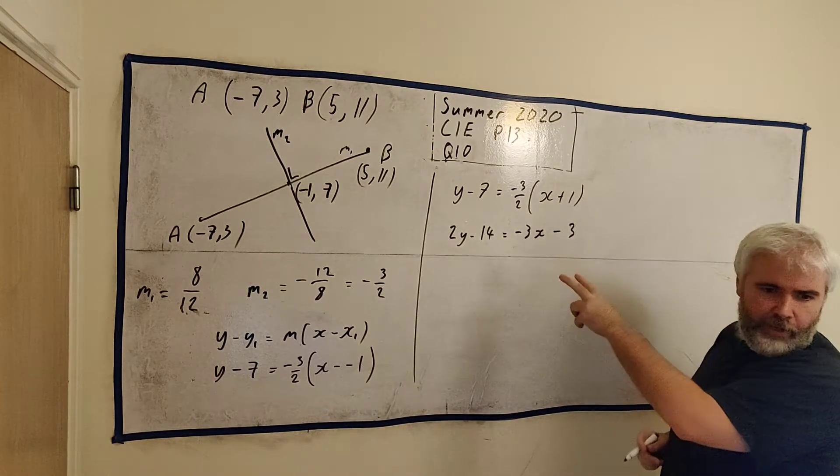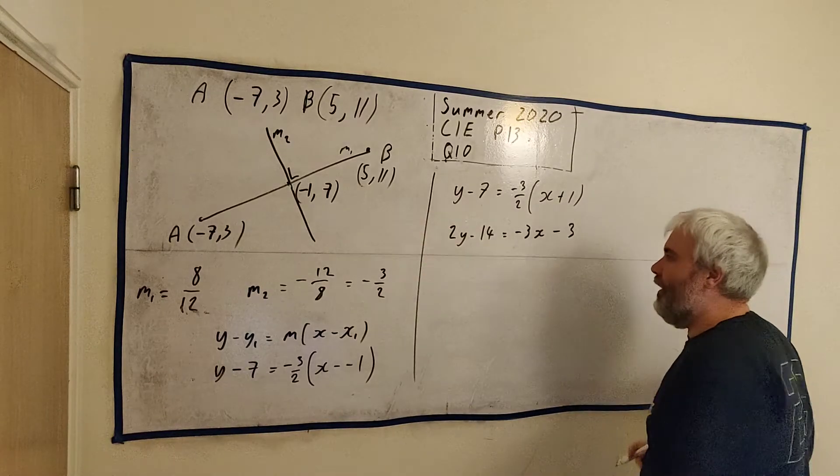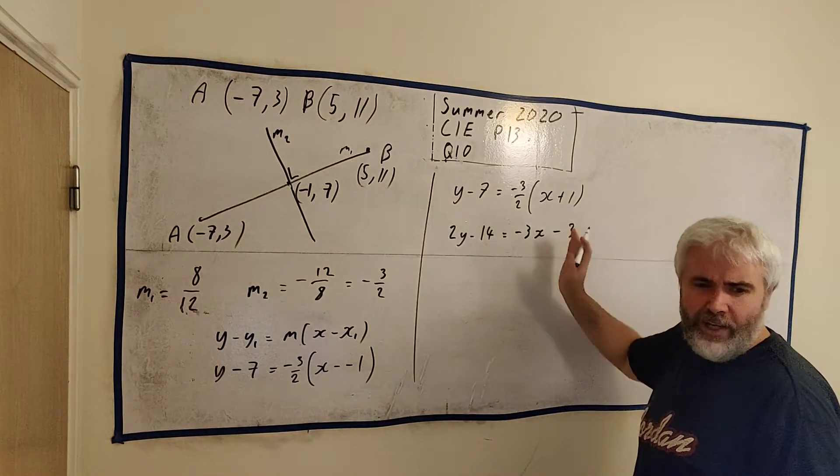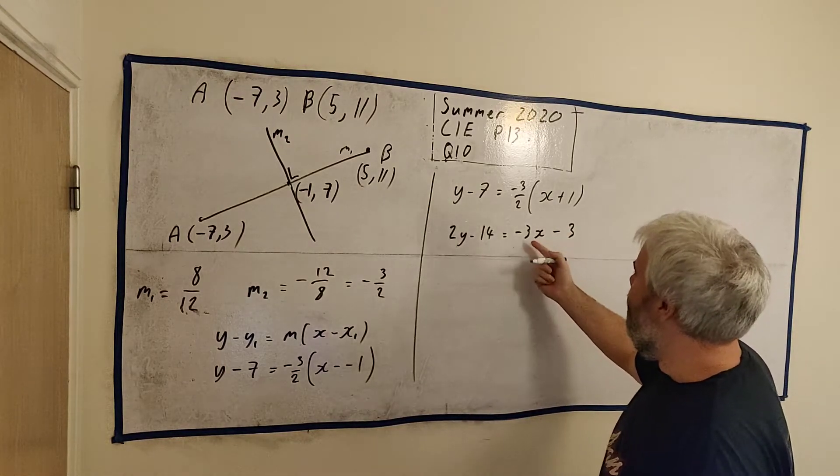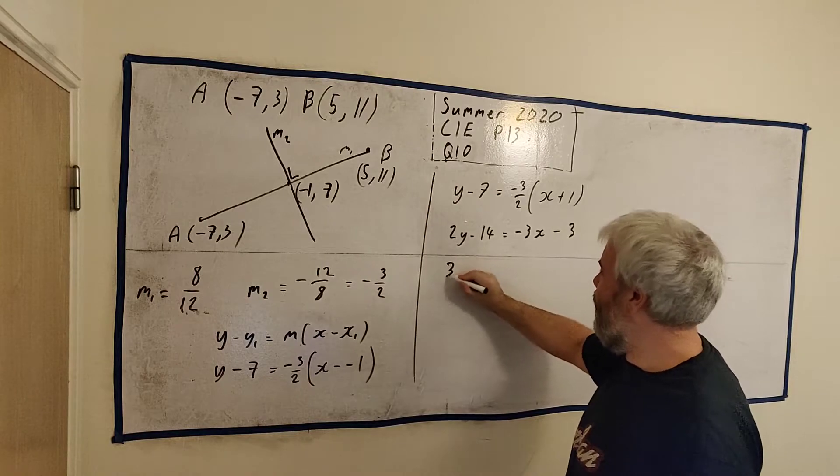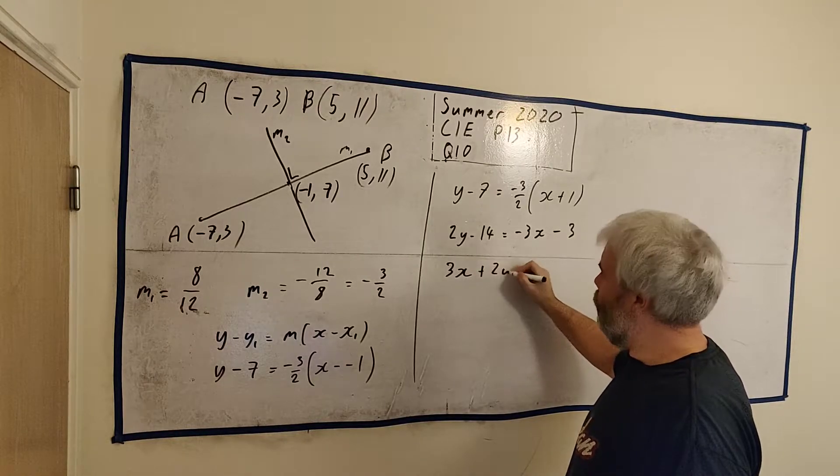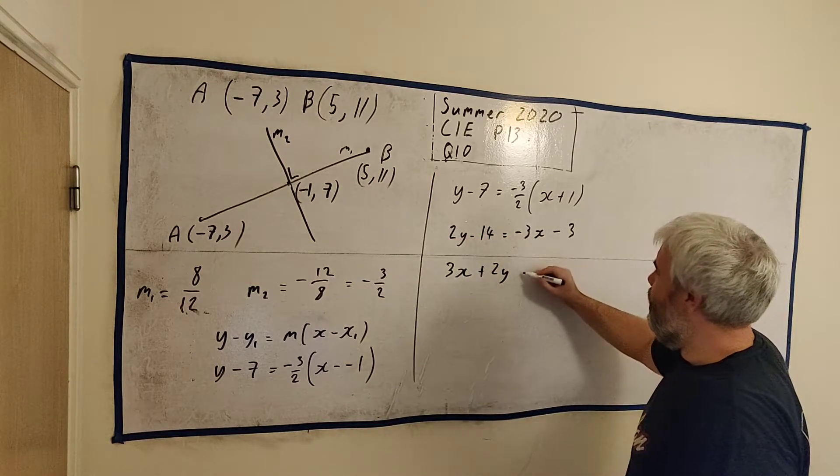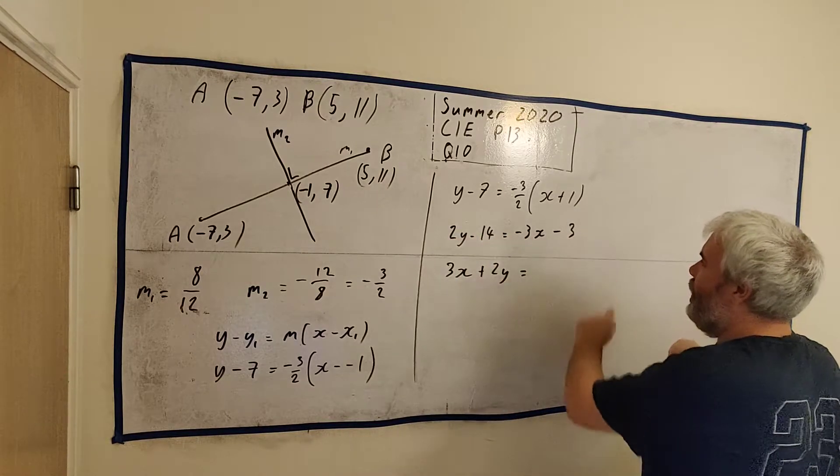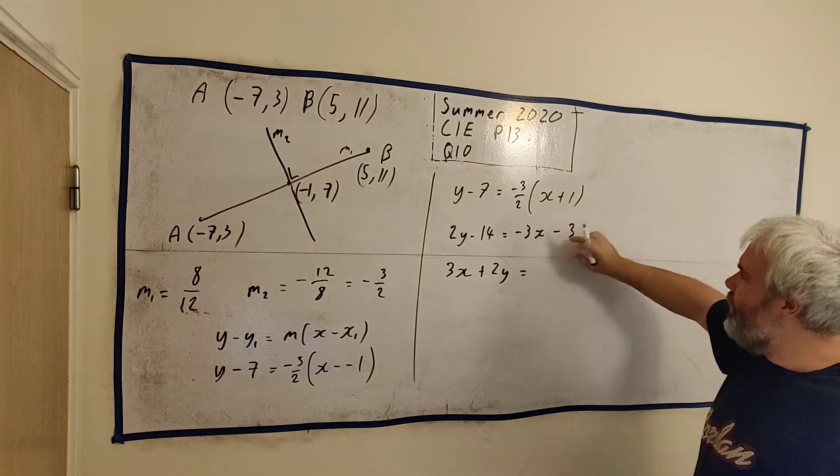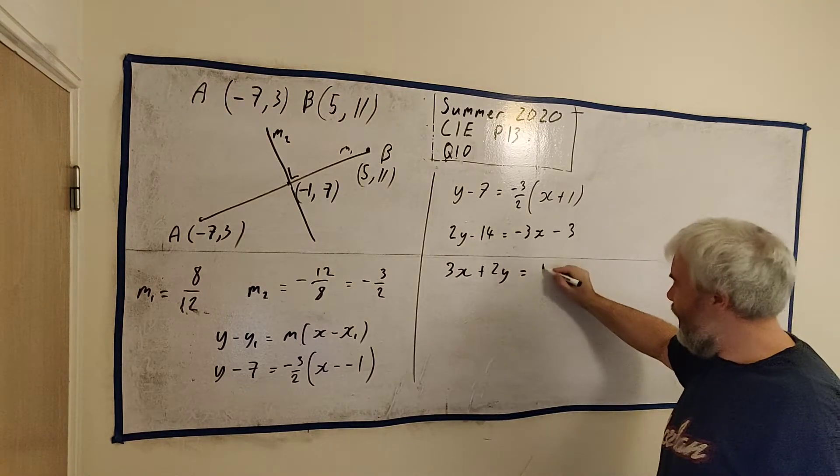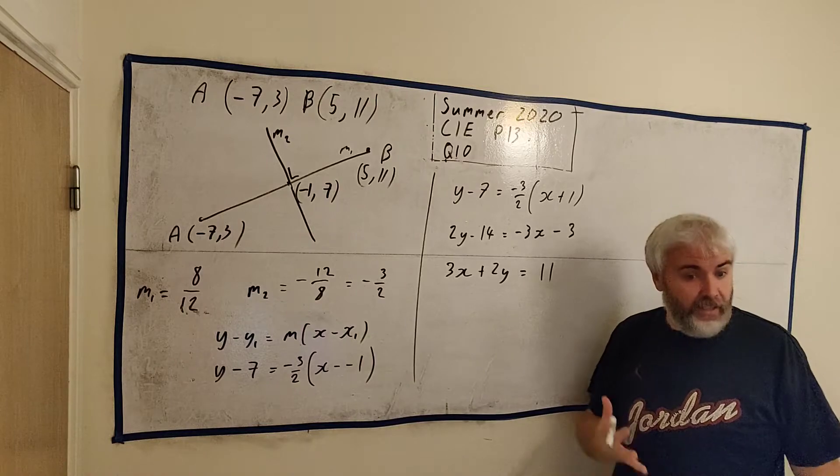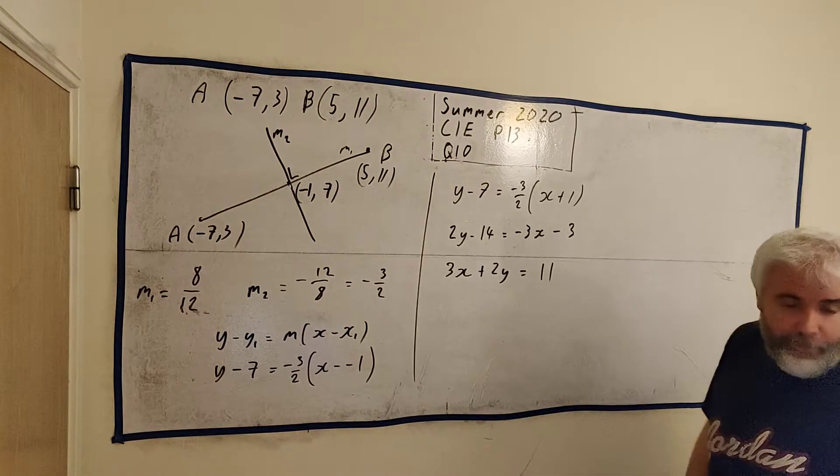So 2y minus 14 equals minus 3x and minus 3. How do they want it looking? All the x and y's on the left, the numbers on the right. Let's add 3x to both sides. We get 3x plus 2y equals, add 14 to both sides, 14 minus 3 is 11. And that's exactly what they wanted. Good. We didn't make a mistake.